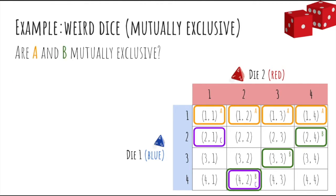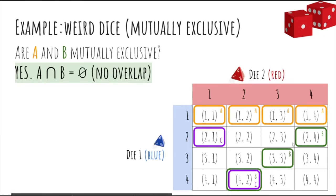Okay, so now are A and B mutually exclusive? Well, there's no overlap. They both cannot happen at the same time, so they are mutually exclusive.